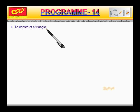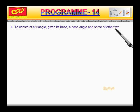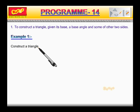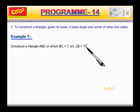To construct a triangle, given its base, a base angle, and sum of other two sides. Example 1: Construct a triangle ABC in which BC is equal to 7 cm, angle B is equal to 75 degrees, and AB plus AC is equal to 13 cm.